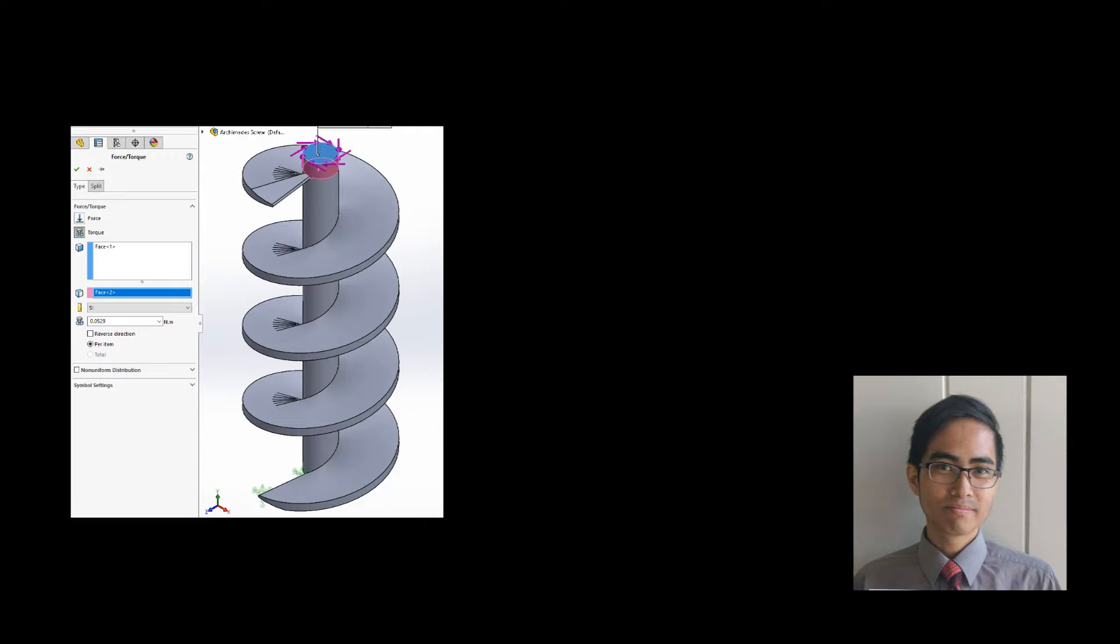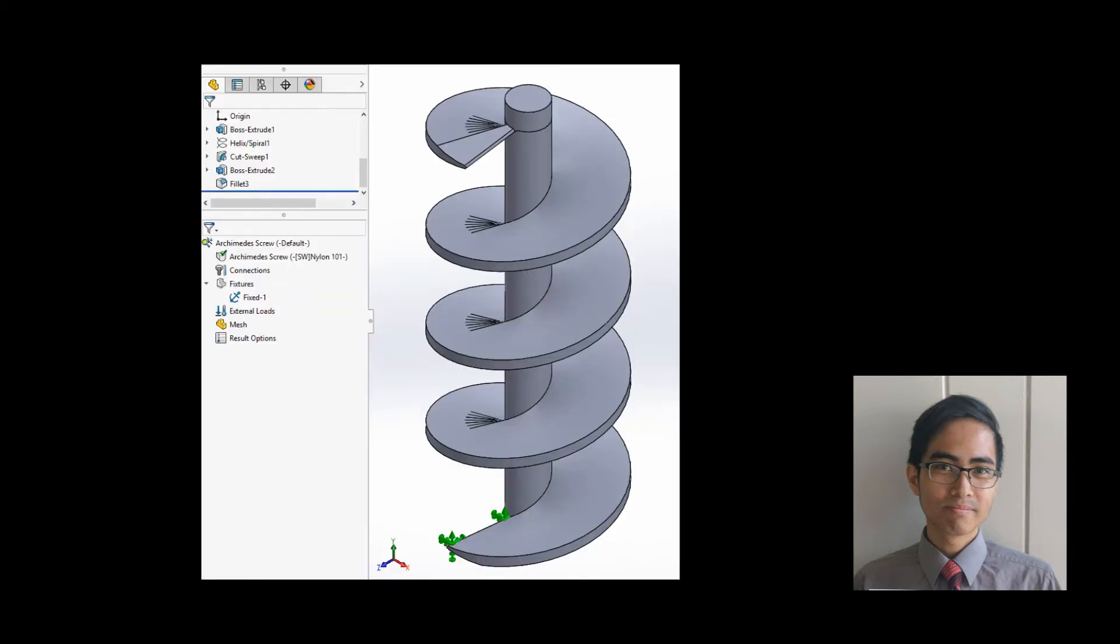There was one external load applied to the Archimedes screw. A clockwise torque is applied by the motor to the top of the Archimedes screw where the motor is attached. The overall torque that was applied clockwise to the top of the Archimedes screw by the DC motor was calculated to be equal to 0.0529 Nm. The bottom of the screw where it scoops up the pills is fixed.